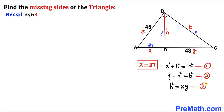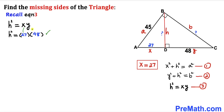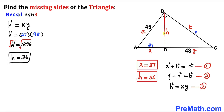Recalling equation 3 — H² = X·Y — and substituting X = 27 and Y = 48, we get H² = 27 × 48 = 1296. Taking the square root of both sides, H = 36. So the altitude BD = 36 units.